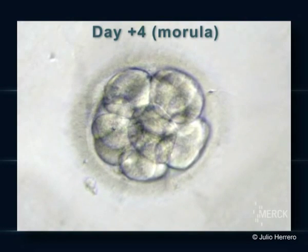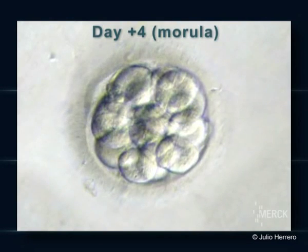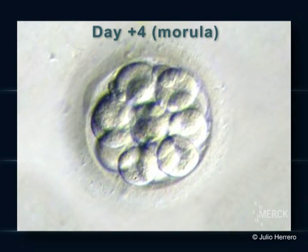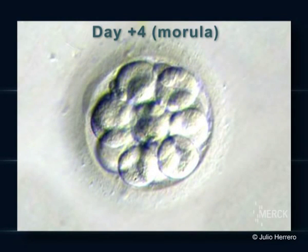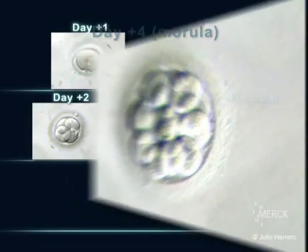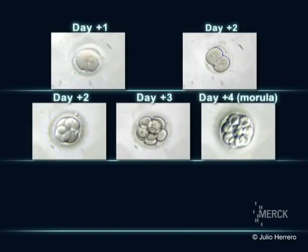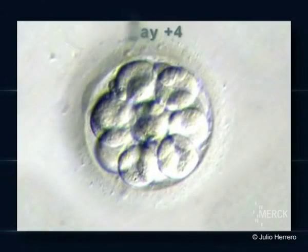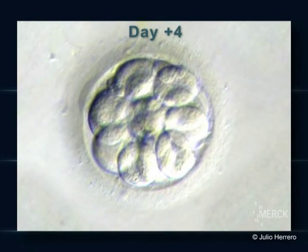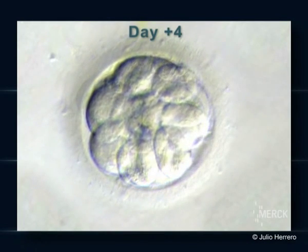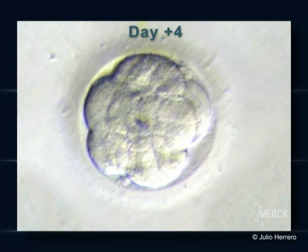On day four, the embryo divides a number of times, becoming a morula. This is when it begins to become compact.